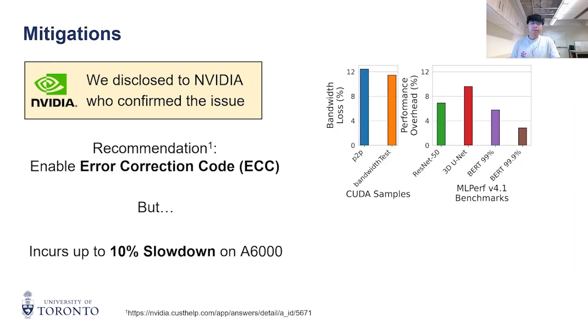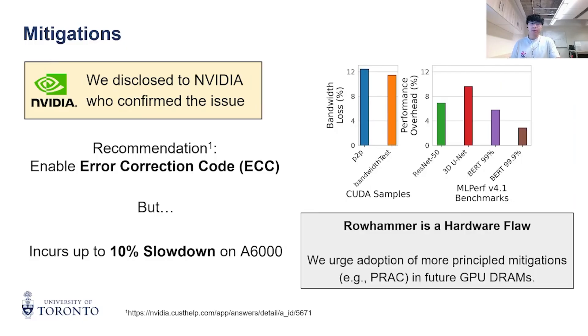NVIDIA recommends enabling ECC for all of these GPUs in their security notice. However, we observed up to 10% slowdown on our GPU with ECC enabled. Thus, at its core, Rowhammer is a hardware flaw, and we urge principal mitigations in future DRAMs.